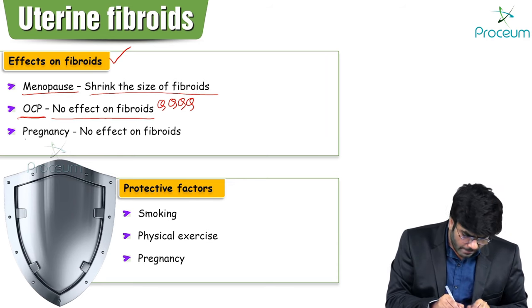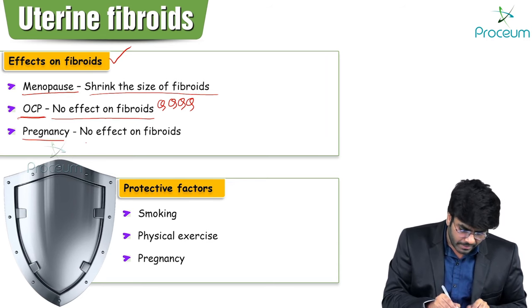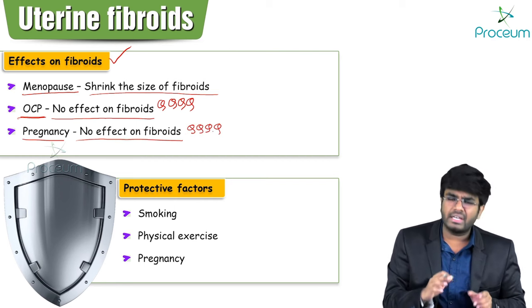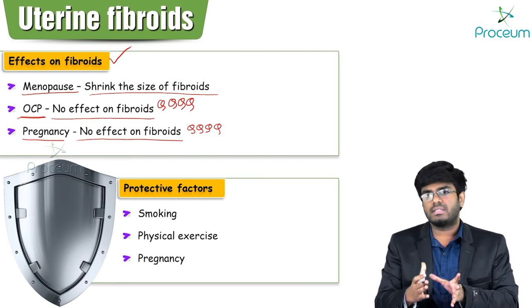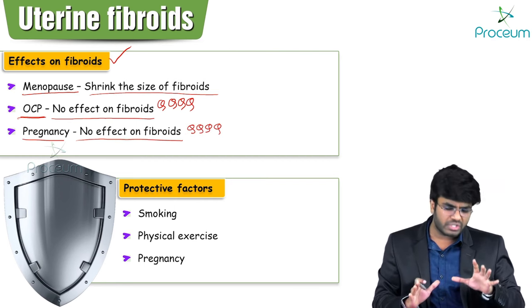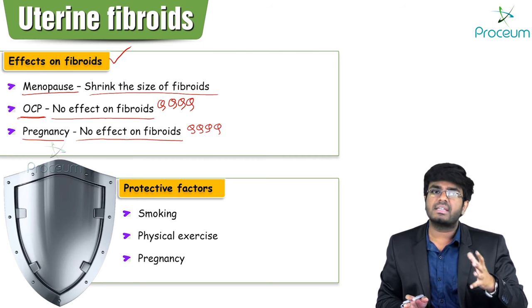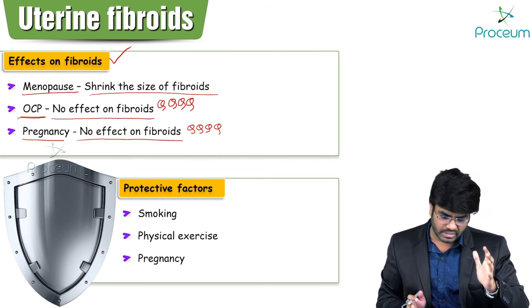Pregnancy has no effect on fibroids — it neither shrinks nor increases the size of the fibroid during pregnancy.